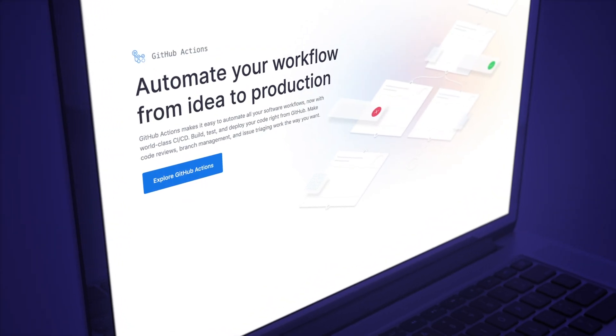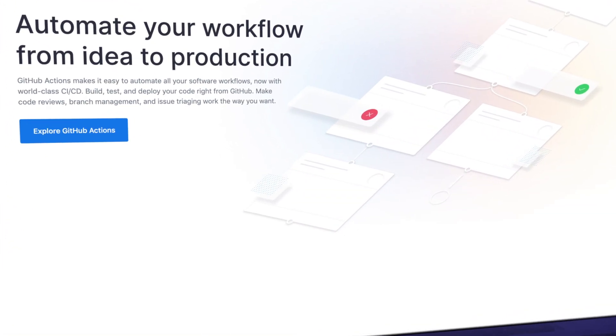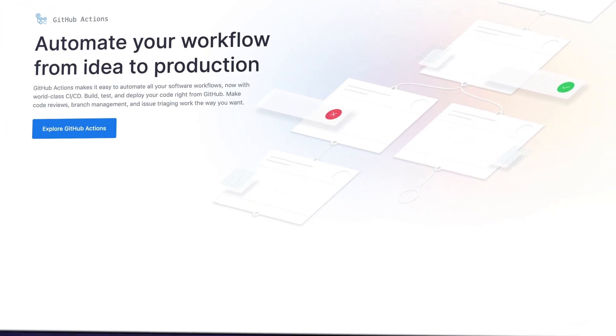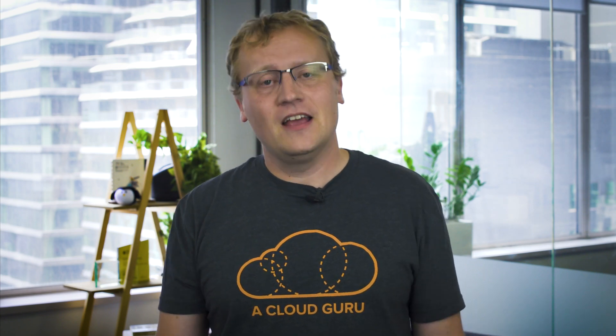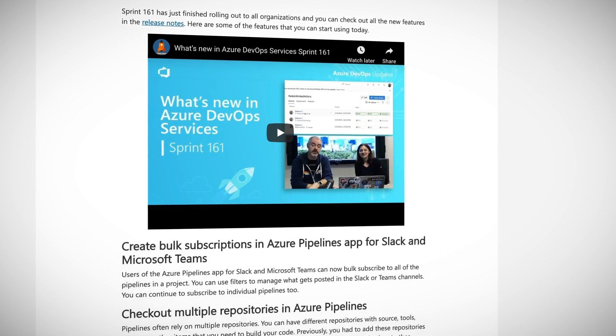GitHub Actions is a new way to build and deploy your code directly from GitHub. Currently sitting at 1,585 different actions that you can trigger for your project on GitHub, there is a new action for Azure Pipelines. You can use GitHub Actions to trigger an Azure Pipeline run directly from your GitHub account's workflow. This means a continuous integration and deployment process that starts at GitHub.